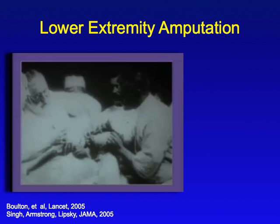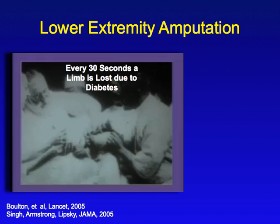Lower extremity amputations in persons with diabetes is a formidable problem. In this slide, you're seeing a slide captured from the first video of a surgery — Ernst von Bergman in 1901 in Berlin performing a lower extremity amputation. It has been said, in fact on the cover of The Lancet in November of 2005, that somewhere in the world, every 30 seconds, a limb is lost as a consequence of diabetes.